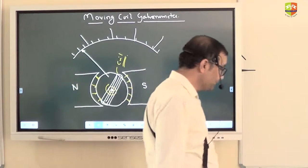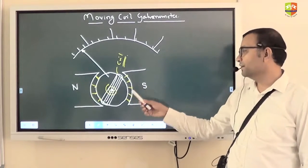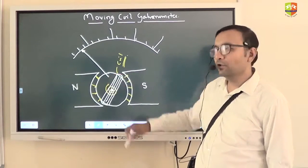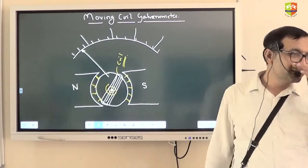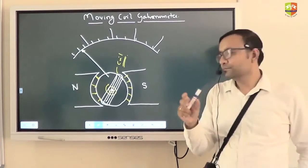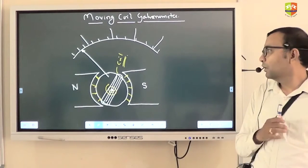Now this coil is bound on a cylindrical restraint which can rotate about this axis. So basically if the coil experiences a torque it will rotate along with the cylinder. Understood? This part understood? Yes. Okay.